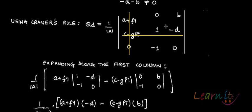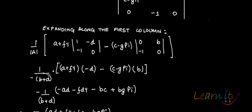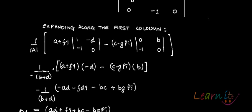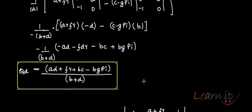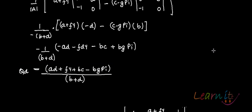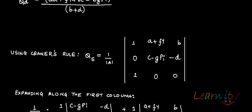Completing the expansion — with the remaining submatrix entries 0, B, minus 1, 0 — and substituting 1 over determinant A as minus 1 over (B plus D), we calculate and obtain QD equals AD plus FY·D plus BC minus BG·PI, all divided by B plus D.